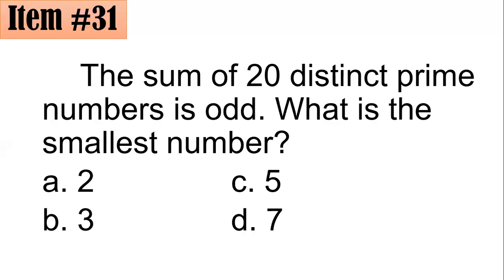Moving on to item number 31. The sum of 20 distinct prime numbers is odd. What is the smallest number? Should it be 2, 3, 5, or 7? Okay, so think about this. Let's do some sort of analysis here.